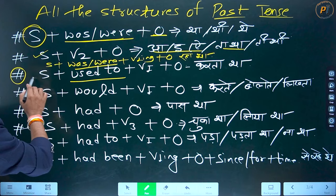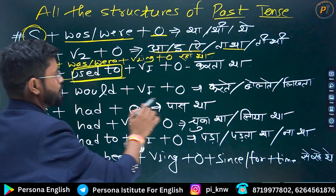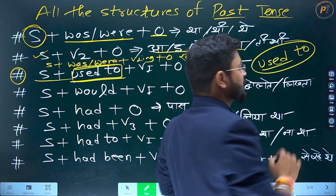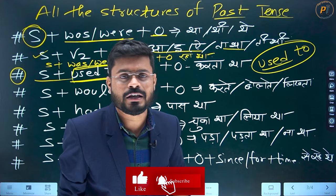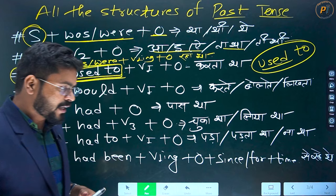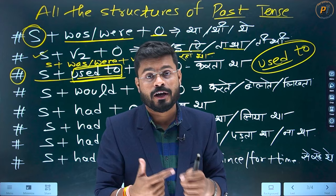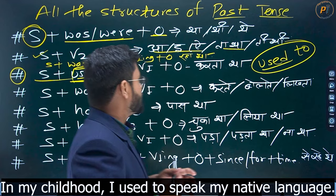'Used to' — dekho, 'used to' ek adjective bhi hai jiska matlab hota hai kisi cheez ka aadi hona. Jisse aapne kaha: I am not used to — maine iska used to nahi hoon, matlab maine iska aadi nahi hoon. Toh aap isko aise bhi yaad rakh sakte ho: jo cheez aapki aadat mein nahi hai, usko aap 'used to' mein lagaate hain. Bacchpan mein maine apni native language bola karta tha — in my childhood, I used to speak my native language.